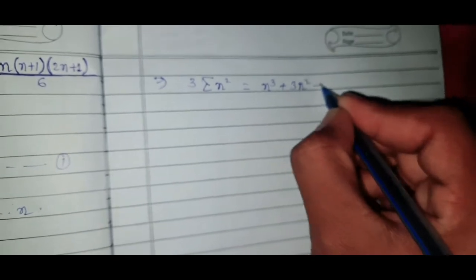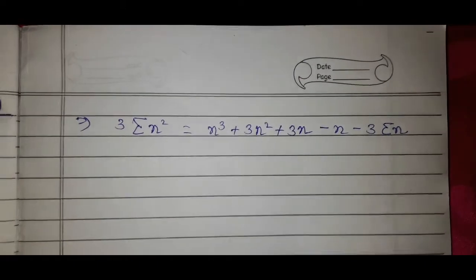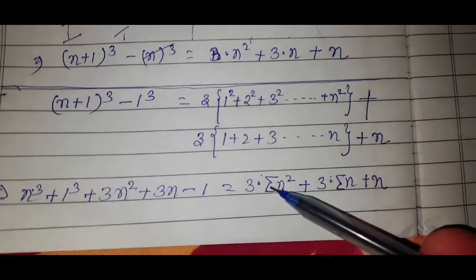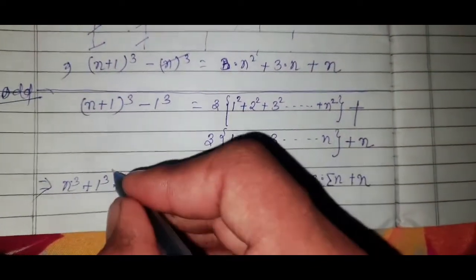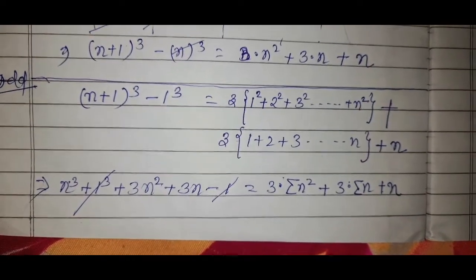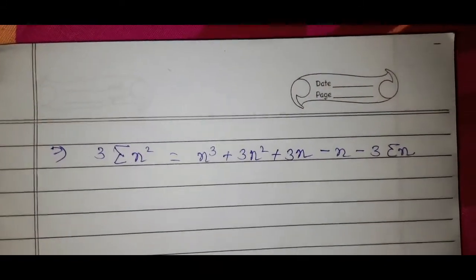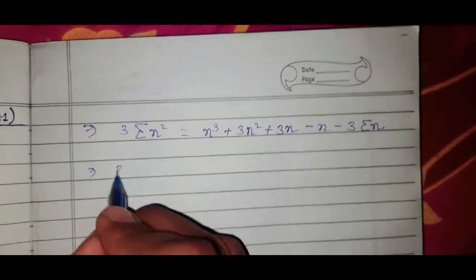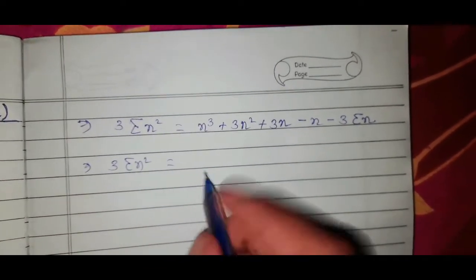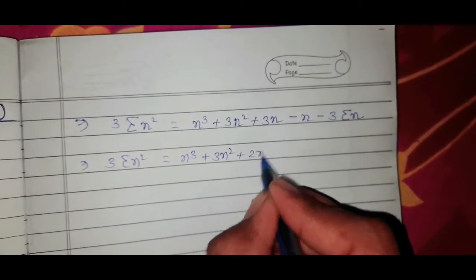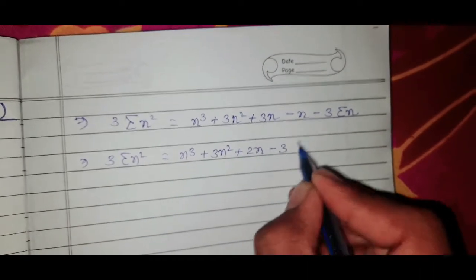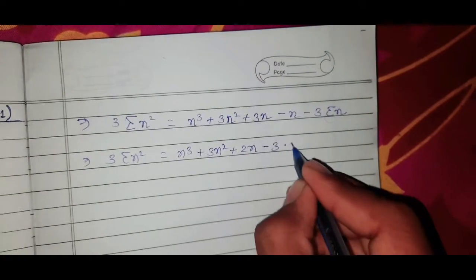Rearranging: n³ + 3n² + 3n - n - 3·Σn. We move the +3·Σn + n from the right-hand side to the left-hand side, making it minus 3·Σn minus n. The minus 1 and plus 1 cancel out. This implies 3·Σn² = n³ + 3n² + 2n - 3·Σn... wait, and substituting Σn = n(n+1)/2.